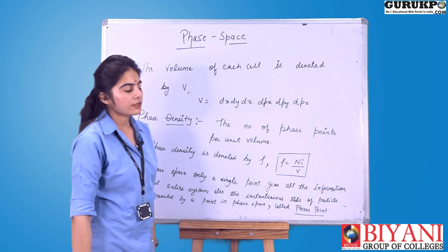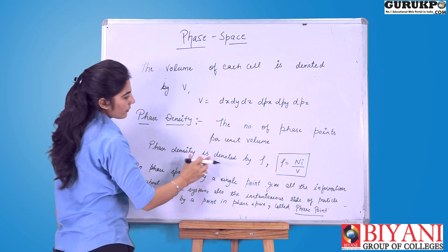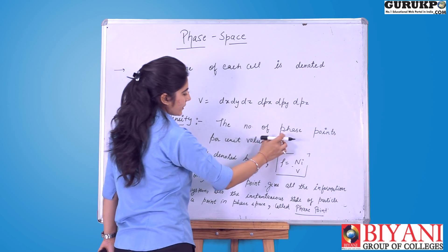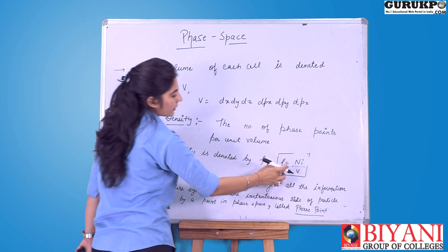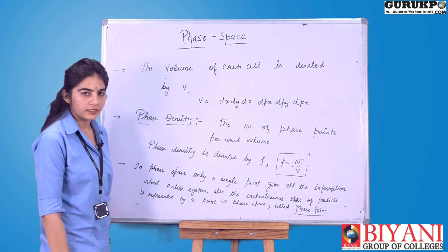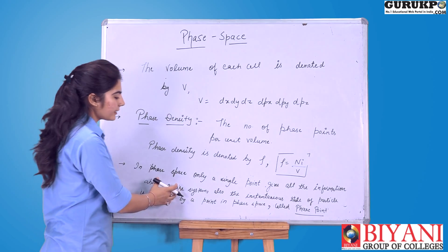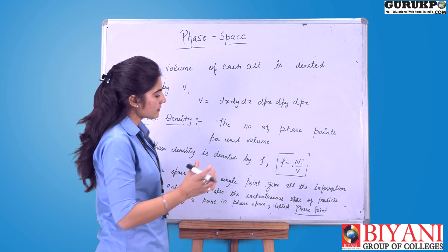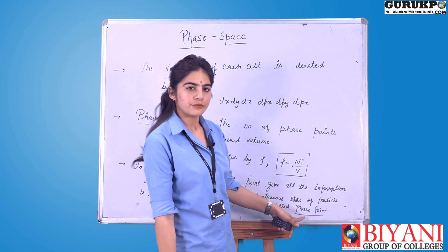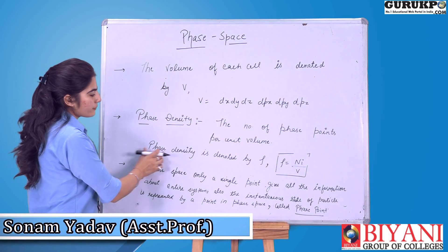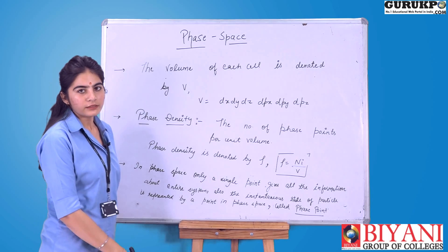Now we also have phase density. The number of phase points per unit volume is called phase density. The number of phase points is denoted by N_i. The instantaneous state of a particle is represented by a single point in phase space, called a phase point. To calculate phase density, we divide the number of phase points by the volume.